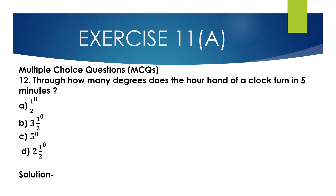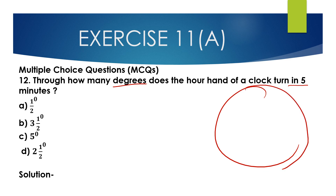Question number 12 — Multiple Choice Question: Through how many degrees does the hour hand of a clock turn in 5 minutes? The options are: half degree, 3 and a half degrees, 5 degrees, and 2 and a half degrees.